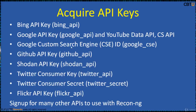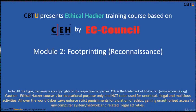Some of the API keys used with ReconNG include the Bing API key, Google API key, Google Custom Search Engine (CSE), GitHub API key, Shodan API key, and several others. You can sign up for many other APIs to use with ReconNG. Thank you for watching.